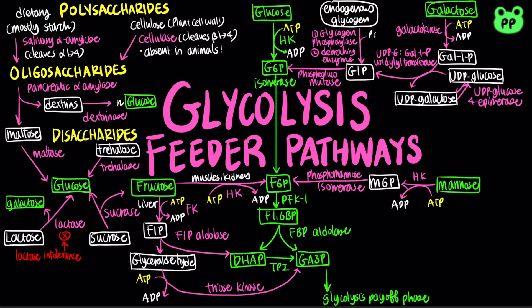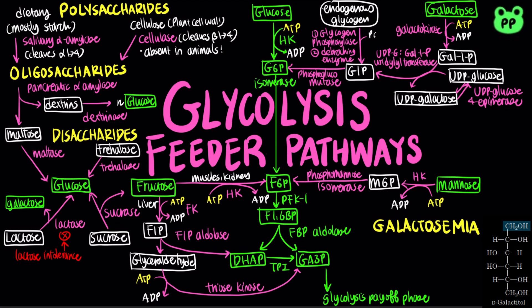A defect in any of the three enzymes in this pathway causes galactosemia in humans. Without these enzymes, galactose is converted to galactitol, which can accumulate in the lens and lead to cataracts during infancy.